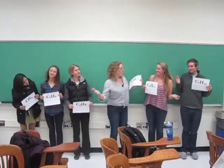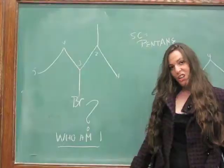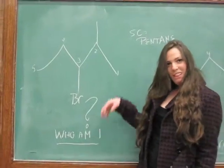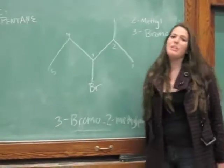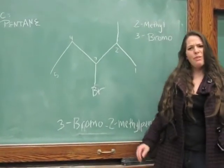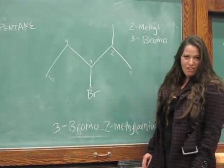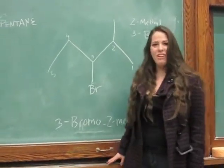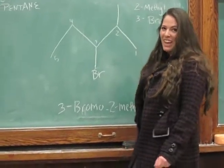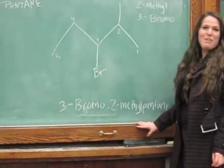How do you name molecules in orgo? You start by naming the longest carbon chain. How do you deal with substituent components — like alkyl halides, alkenes, or alkynes? Number the substituent components with the first one nearest the end of the chain. You alphabetize the name with its location on the chain, and then you gather three kinds of components.